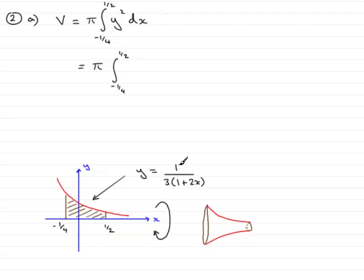Now if we square that, we're going to get 1 over 3 all squared, which is 1 ninth, and that's a constant, so it's going to look better put out the front here, so that's π over 9. Then we have 1 squared, which is 1, all over 1 plus 2x all squared, and don't forget integrated with respect to x.